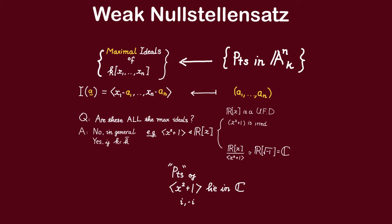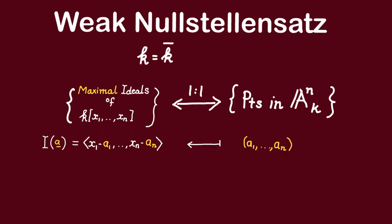Thus, this issue can be resolved if we look over algebraically closed field instead. Thus, we claim that if k is an algebraically closed field, then we have a bijective correspondence between maximal ideals of the polynomial ring in n variables over k and points in the affine n space over k.